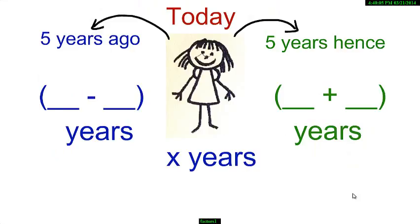Remember the pattern you saw. So, 5 years ago she was x minus 5 years. 5 years hence she will be x plus 5 years.